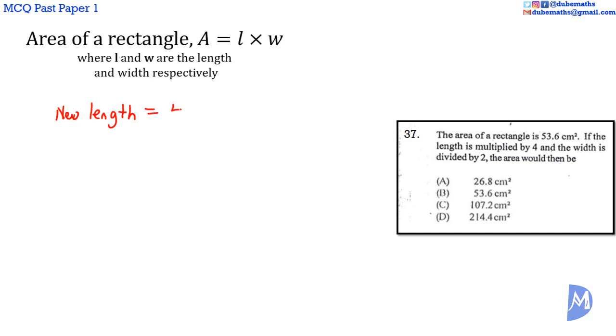Question 37. The area of a rectangle equals length times width. The new length is 4L and the new width is one-half W, where L and W are the length and width of the original rectangle respectively. The new area would equal the new length multiplied by the new width: 4L times one-half W, which is 4 times one-half times L times W.